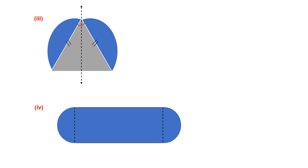Now look at figure 4. In this figure we can have one line of symmetry and one more line of symmetry — so two lines of symmetry in total.